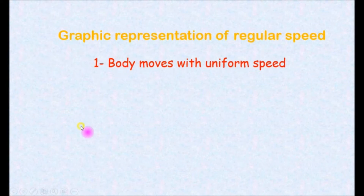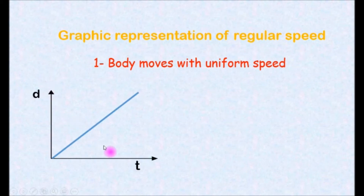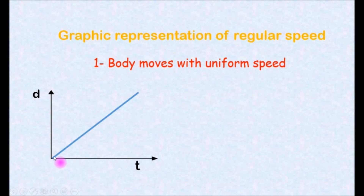Let's see some graphs that represent a body moving with regular speed. Regular, or uniform, speed means that the body covers equal distances at equal periods of time. When we represent the relation between distance and time for a body moving with uniform speed in a graph, it is represented by a straight line passing through the origin, starting from the origin and going upward.